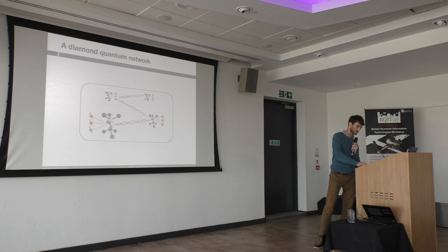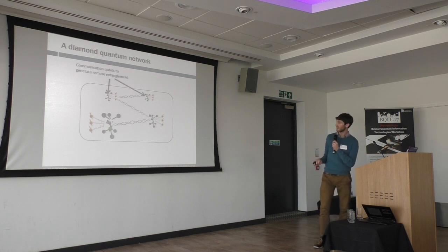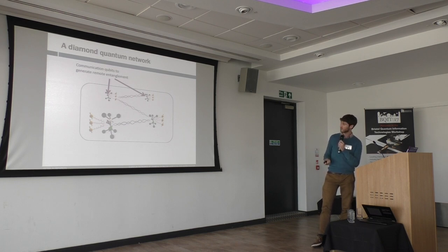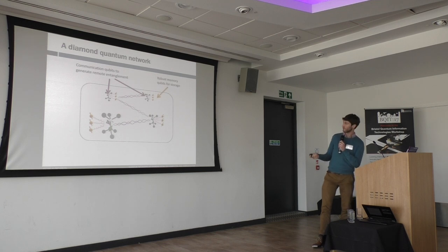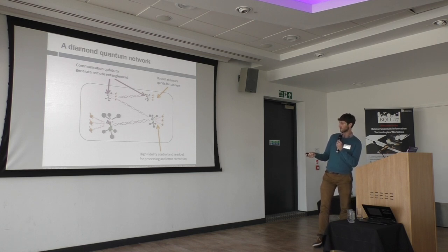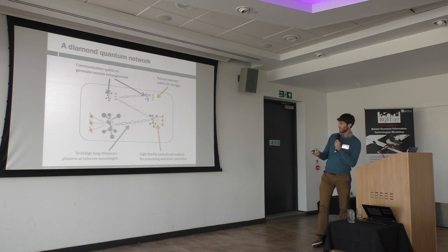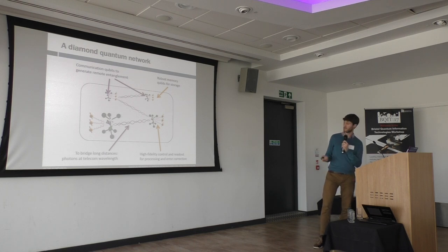Bringing all of those ingredients together, our vision is to have a quantum network built up with nodes, each of which has a nitrogen vacancy centre. The NV centre will act as our communication qubit, so we can use it to entangle different nodes, and we also have memory qubits nearby to store quantum information. We can use the NV centre to control these spins, do error correction and local processing. We also want to incorporate frequency conversion to telecom wavelengths to push the achievable distances.